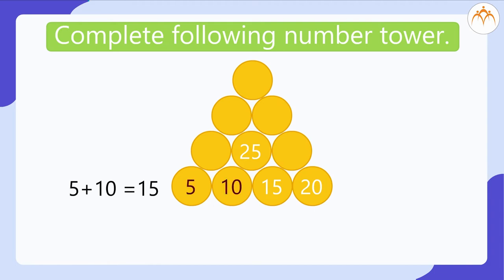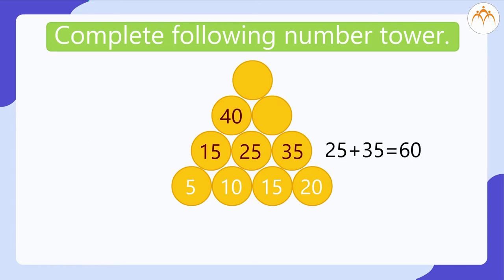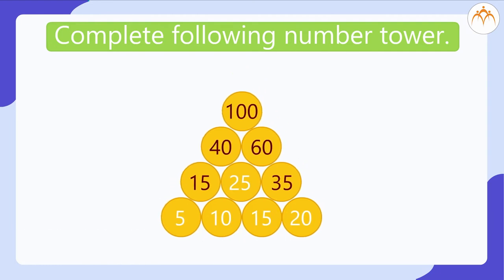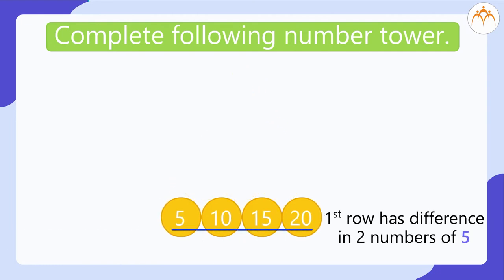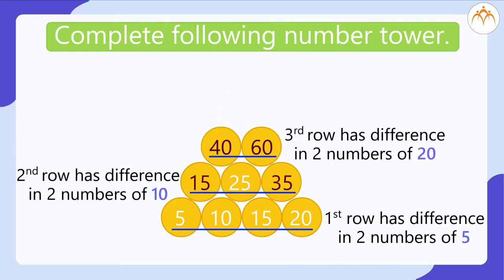2nd row: 5 plus 10 equal to 15. 15 plus 20 equal to 35. 3rd row: 15 plus 25 is equal to 40. 25 plus 35 is equal to 60. 4th row: 40 plus 60 is equal to 100. What do you observe? 1st row has difference in two numbers 5. 2nd row has difference in two numbers 10. 3rd row has difference in two numbers 20.